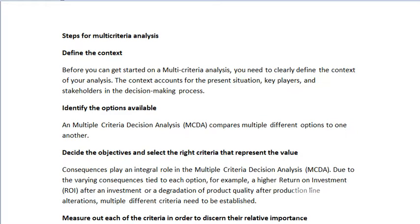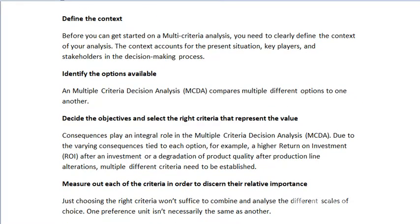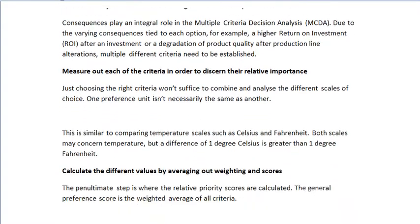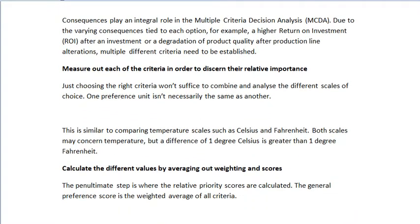Then, identify the options available. If you are going to make a decision, what are the other options available which you can consider? Then decide the objectives and select the right criteria that represent the value — that is, what is your aim and on which basis you want to take a decision.